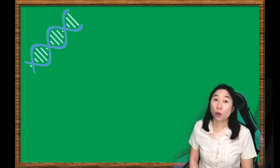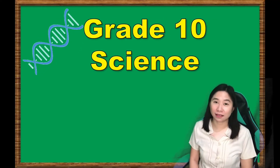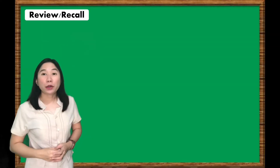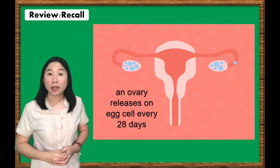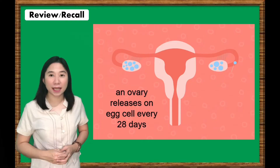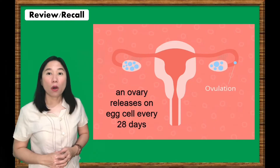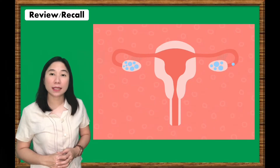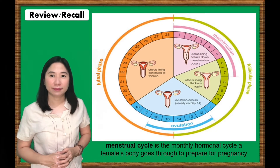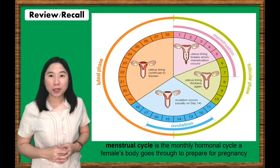Hello students! Welcome to this Grade Science lesson, and I'm your teacher, Marian Suriano. You have learned from your elementary science lesson that on average, a female ovary releases one egg every 28 days. Hormones control the monthly changes happening in the female reproductive system, also known as the menstrual cycle. Let's find out more about the menstrual cycle in today's lesson.